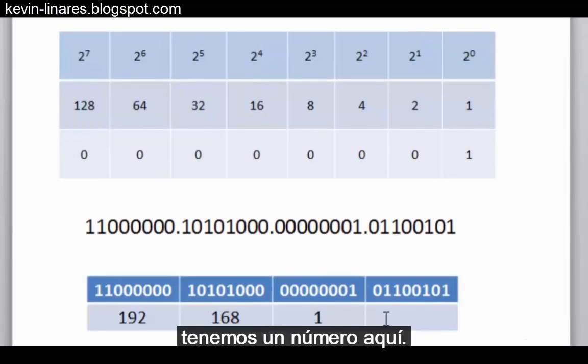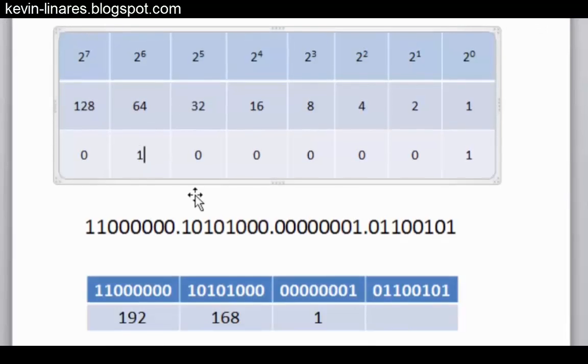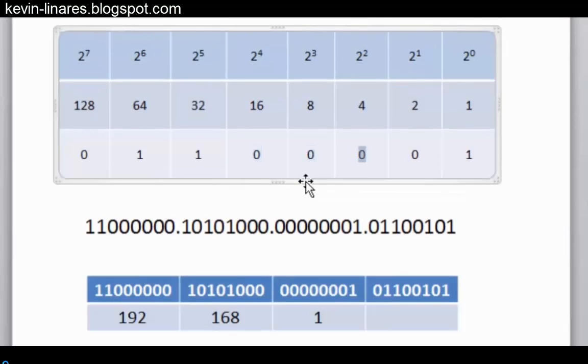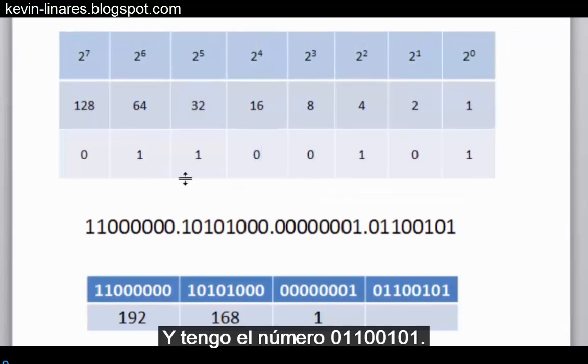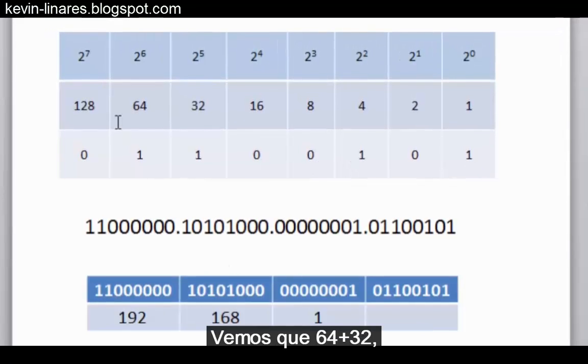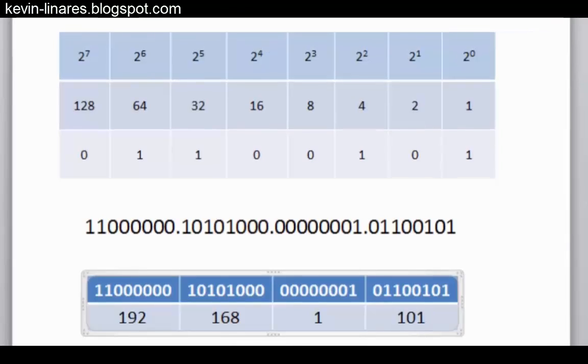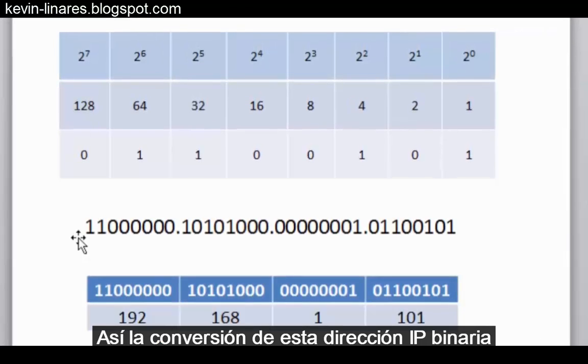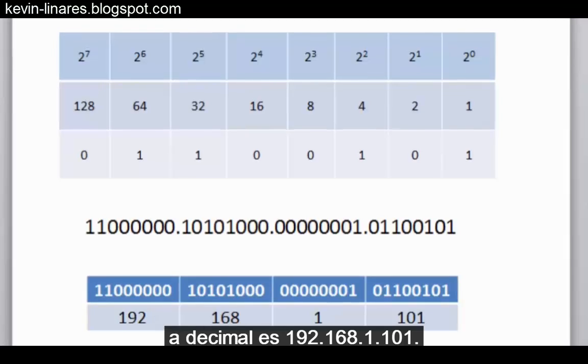And then finally, we have a number here. I'll plug it in here into my table, and I have the number 0, 1, 1, 0, 0, 1. We can see that 64 plus 32, we've already said, is 96, plus 4 is 100, plus 1 is 101. So, the conversion of this binary IP address to decimal is 192.168.1.101.